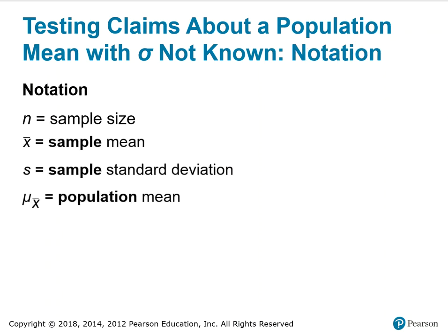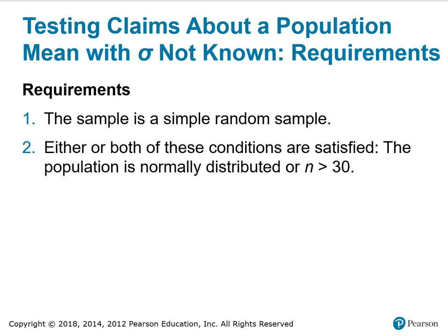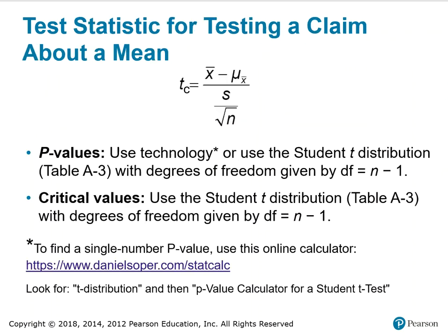n is the sample size, x-bar is the sample mean, s is the sample standard deviation, and mu of x-bar is the population mean. The requirements that must be met are: the sample is a simple random sample, and either or both of these conditions are satisfied — the population is normally distributed, or n is greater than 30.